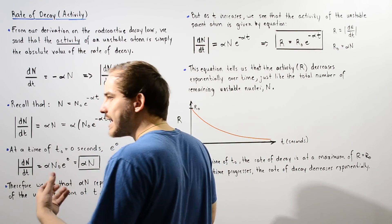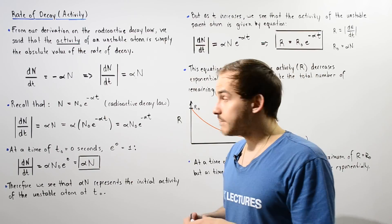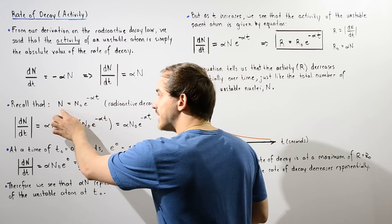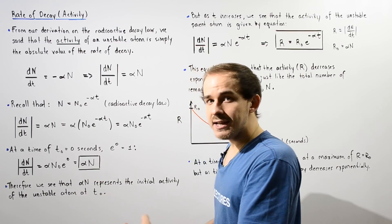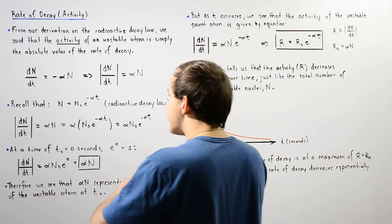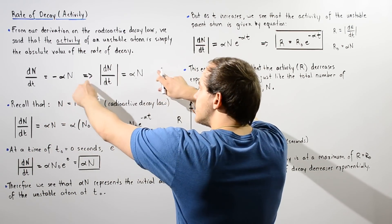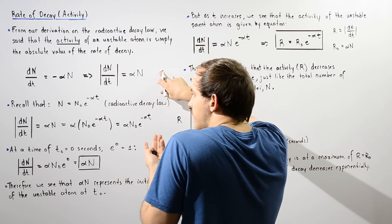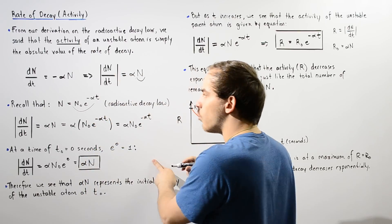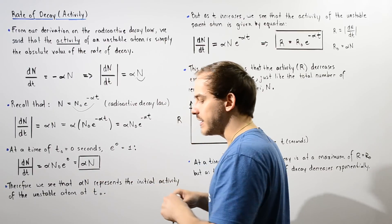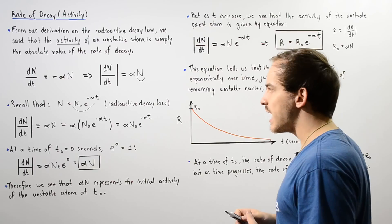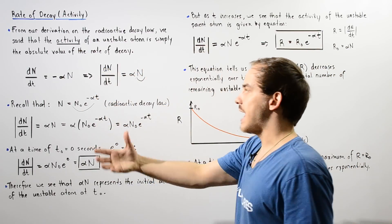Recall in our previous lecture, we derived the equation known as the radioactive decay law. This equation gives us n, the number of remaining unstable isotopes that have not yet undergone radioactive decay. Notice that this n is the same n that appears in the activity equation. We can replace n with the product of these two quantities, where n-naught is the amount of unstable isotopes at an initial time of t-naught of 0 seconds, t is the time, and alpha is our decay constant.